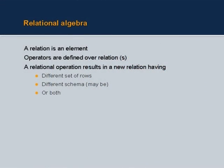A relational operation results in a new relation. It may result in a table with a different set of rows but with the same schema, or a different schema but with the same set of rows, or both — but it will still be an n-tuple of some schema. This simple and elegant mathematical structuring permits us to derive immense value in terms of our power of expression to extract information out of these sets.